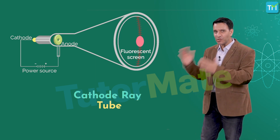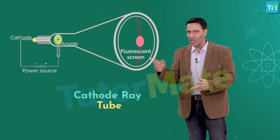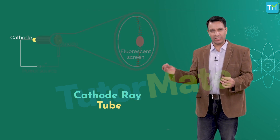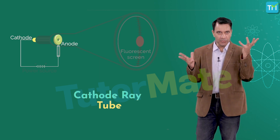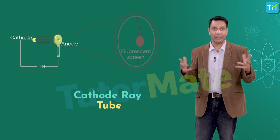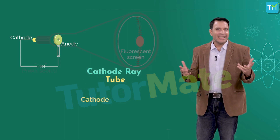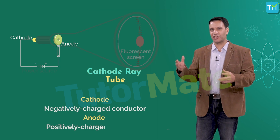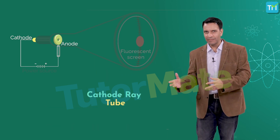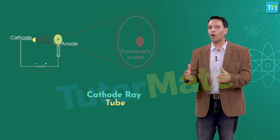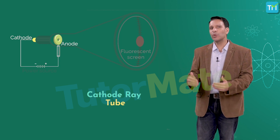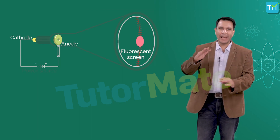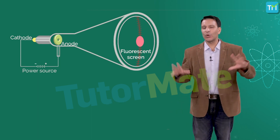Inside the tube, on one side a cathode is placed and on the other side an anode is placed. The cathode is a negatively charged conductor and the anode is a positively charged conductor. The anode has a small hole, and its opposite wall of the tube is coated with fluorescent material from the inside.